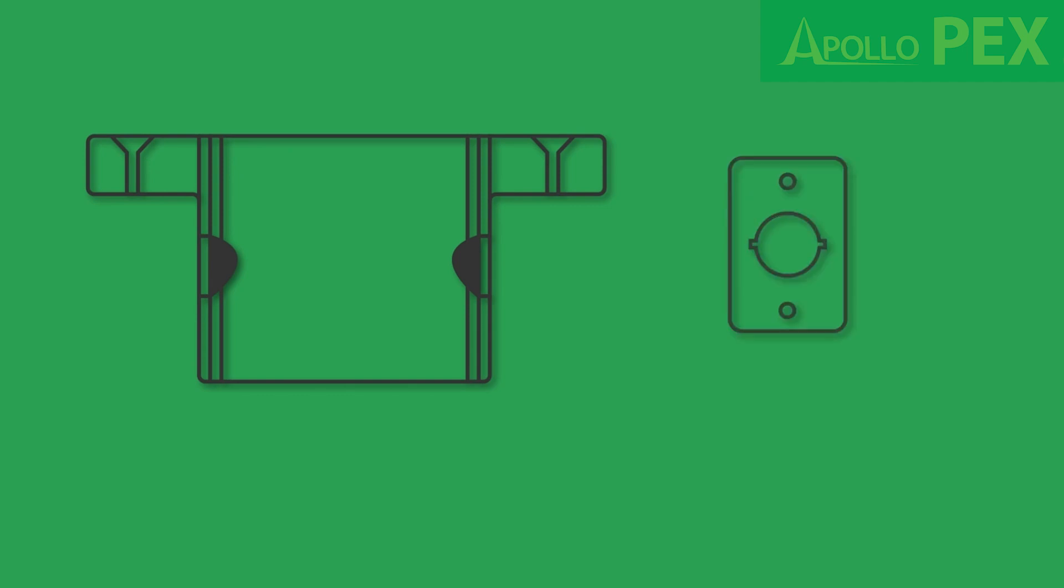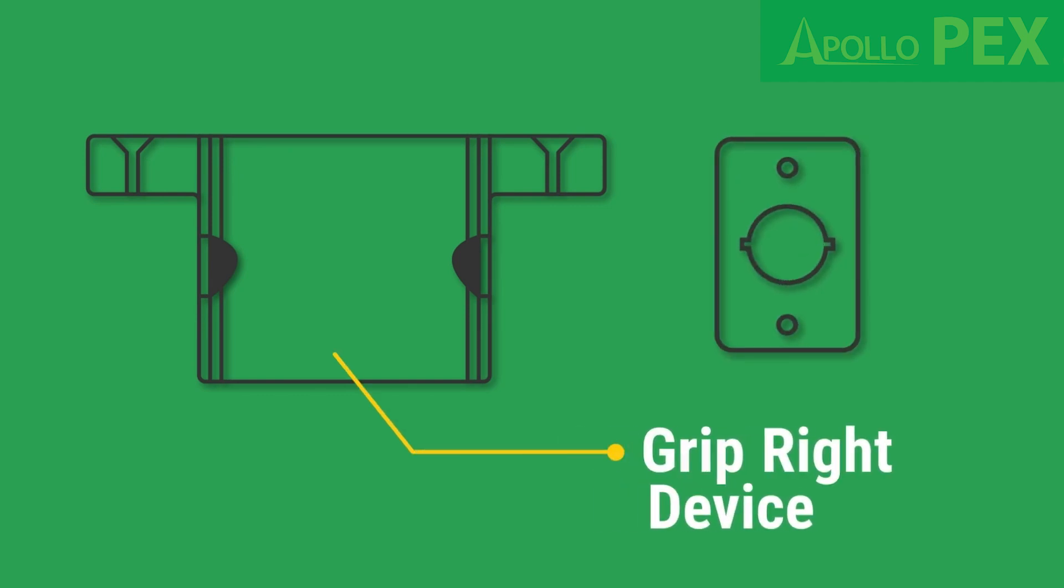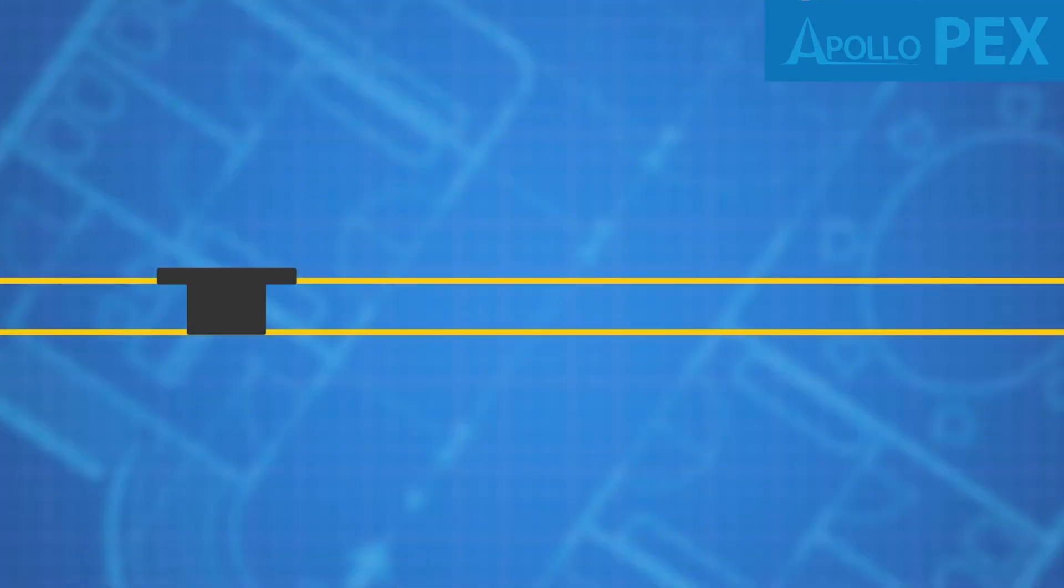Introducing the GripRite device, a pipe support created specifically to help support a section of pipe as it passes through a floor.